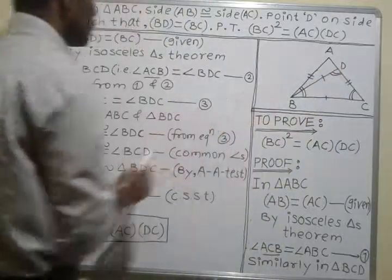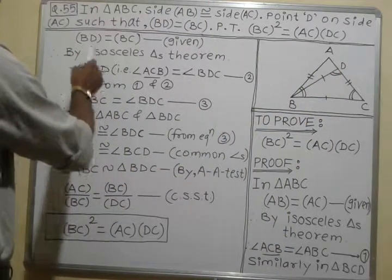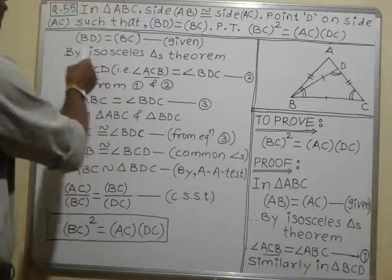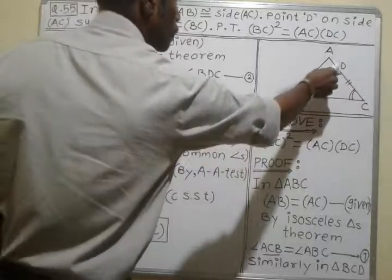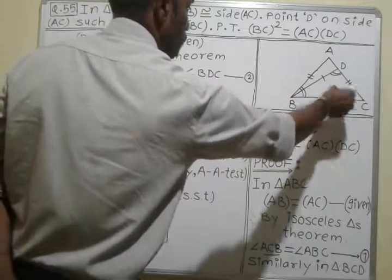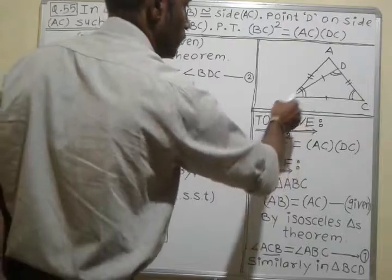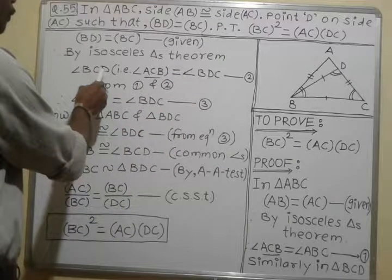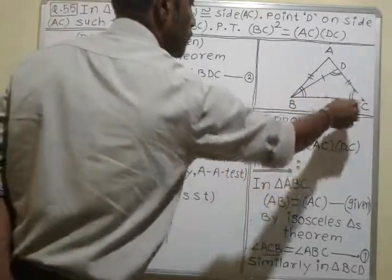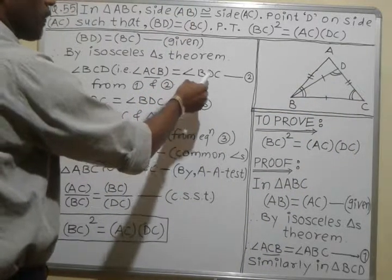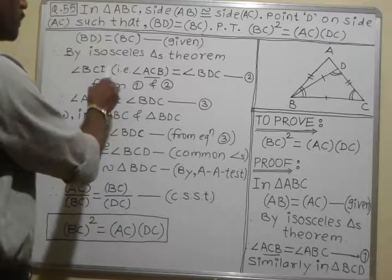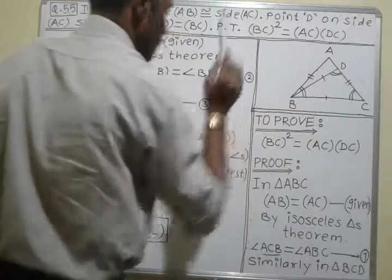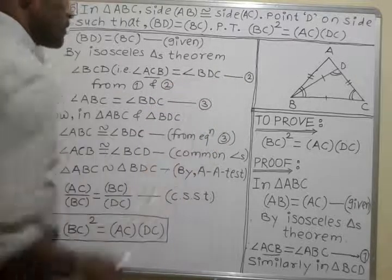Similarly, in triangle BCD, we apply the same isosceles triangle theorem. BD is equal to BC — this is given. If two sides are congruent, then the opposite angles are congruent. Therefore, the angle opposite to BD, that is angle BCD, equals the angle opposite to BC, that is angle BDC. Since angle BCD and angle ACB are the same angle with different names, we write angle ACB is equal to angle BDC. This is equation number 2.